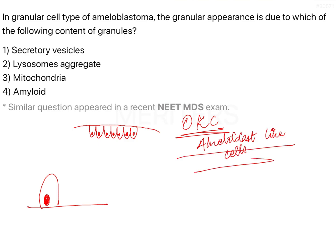Coming to conventional ameloblastoma, called follicular ameloblastoma — it shows tall columnar cells, and in between the cells you have what are called stellate reticulum-like cells. In most instances, these stellate reticulum-like cells present within the follicle will undergo cystic degeneration and you may see a completely empty vacuole. So the cells are arranged in follicles.